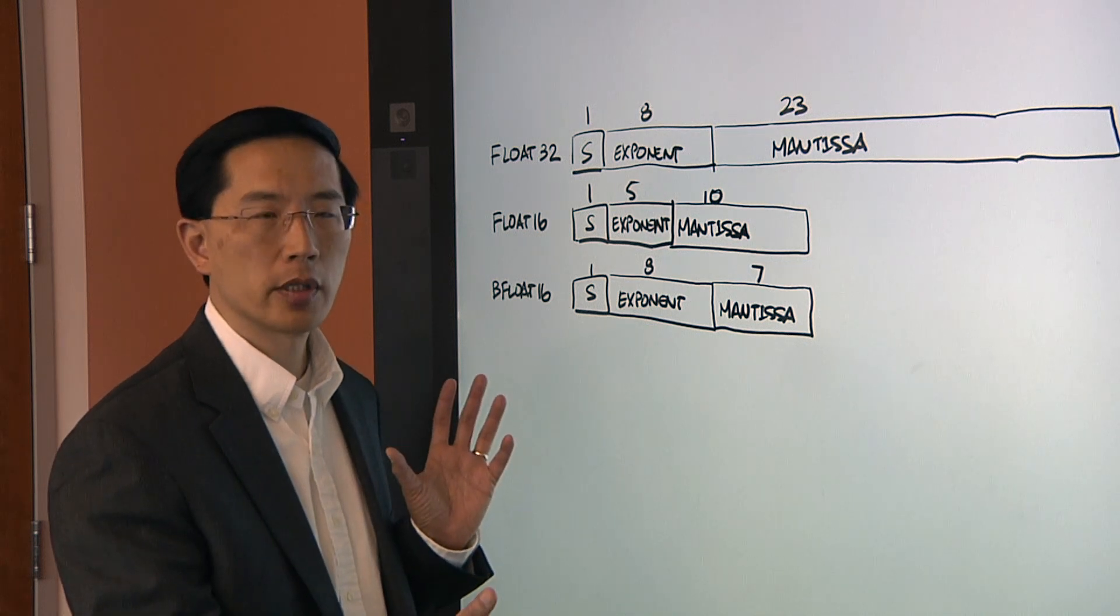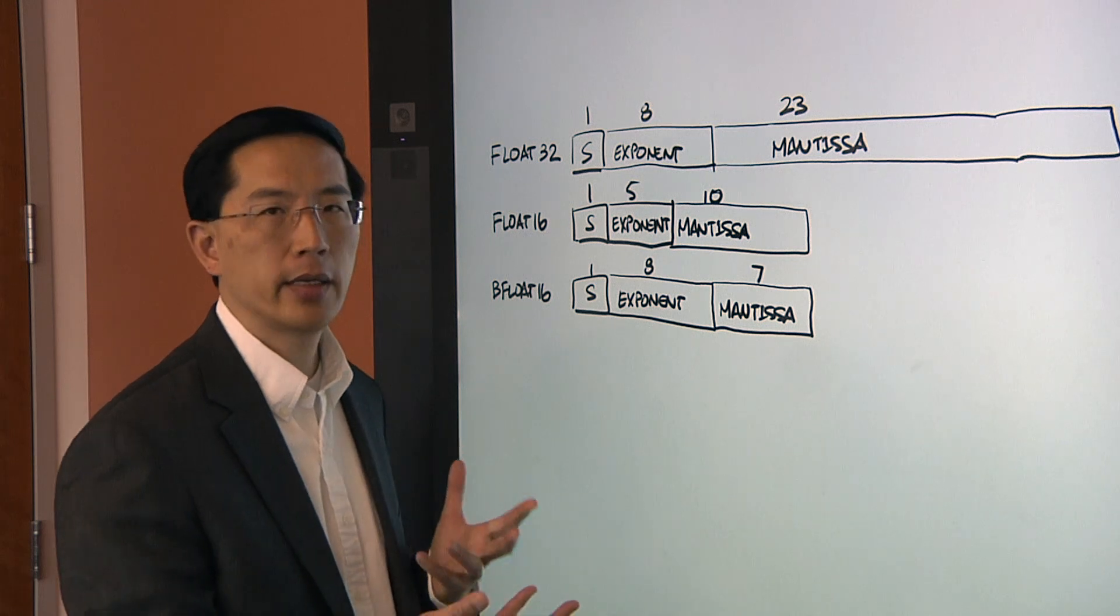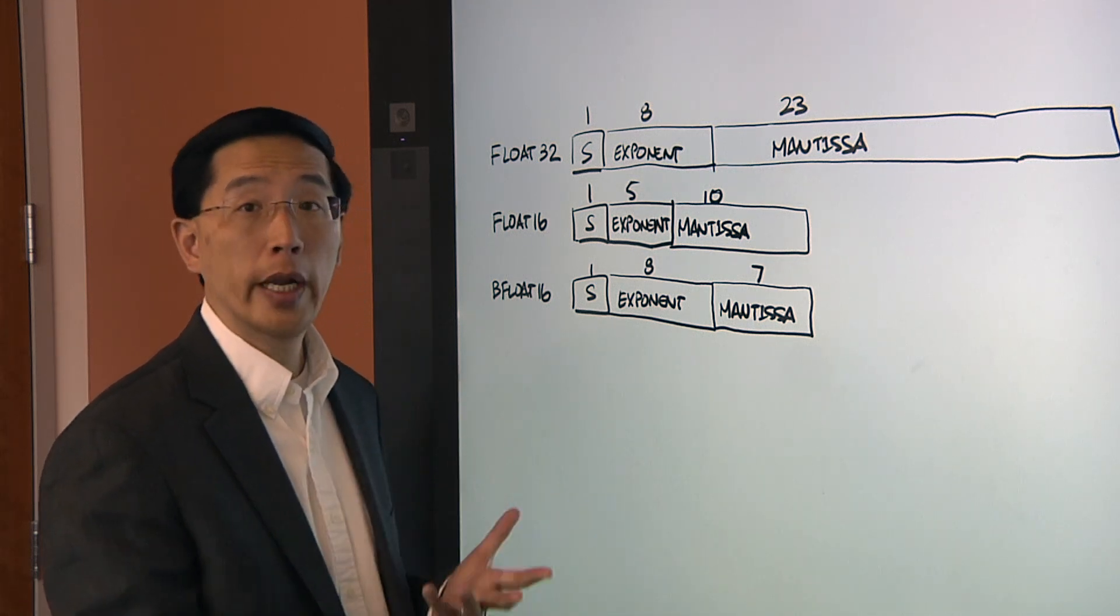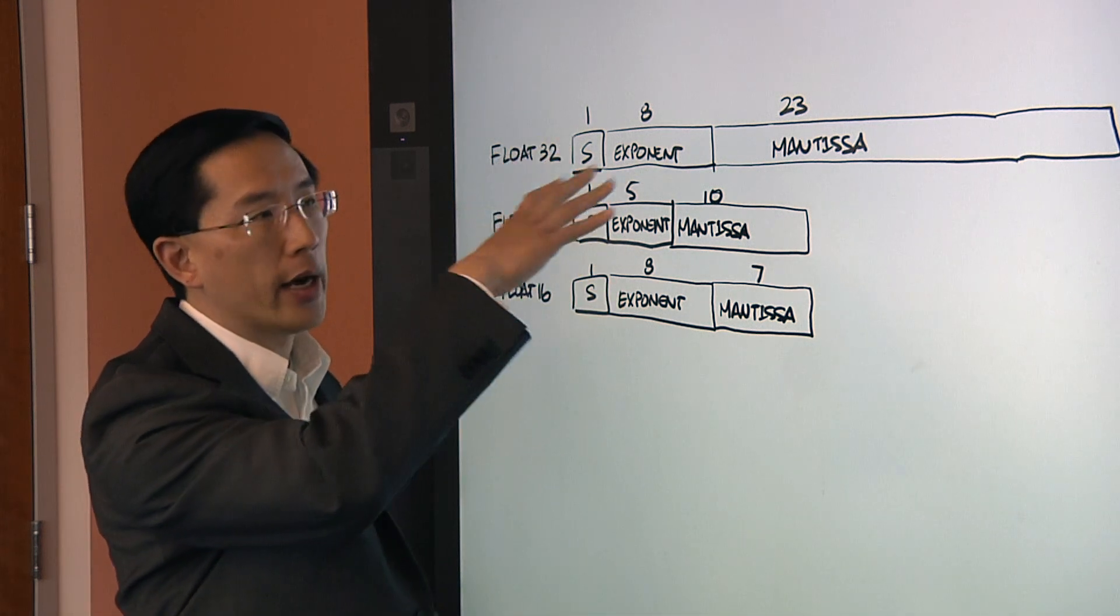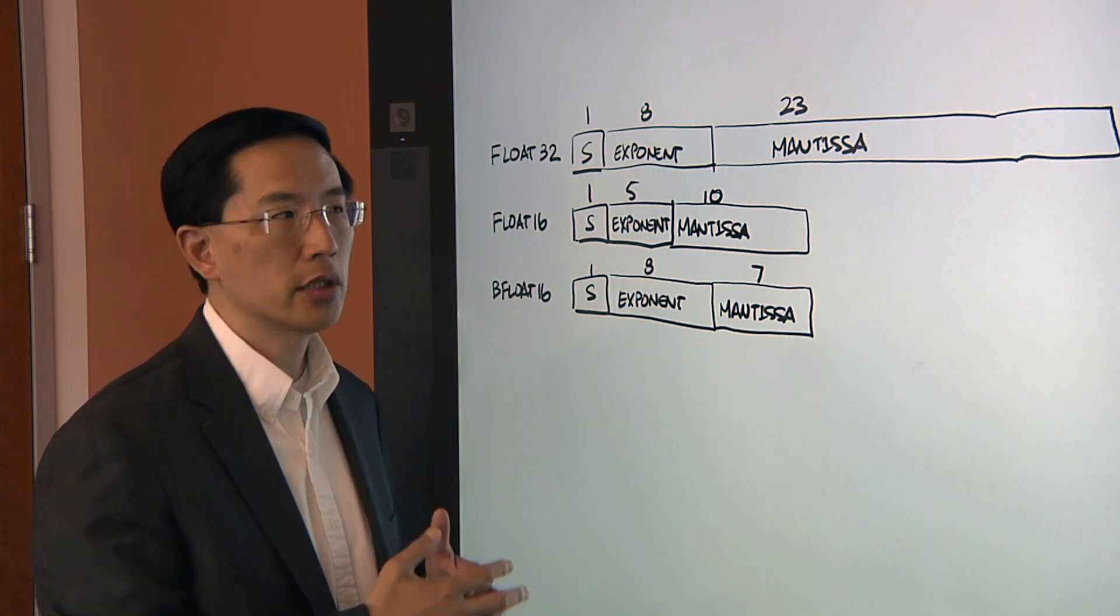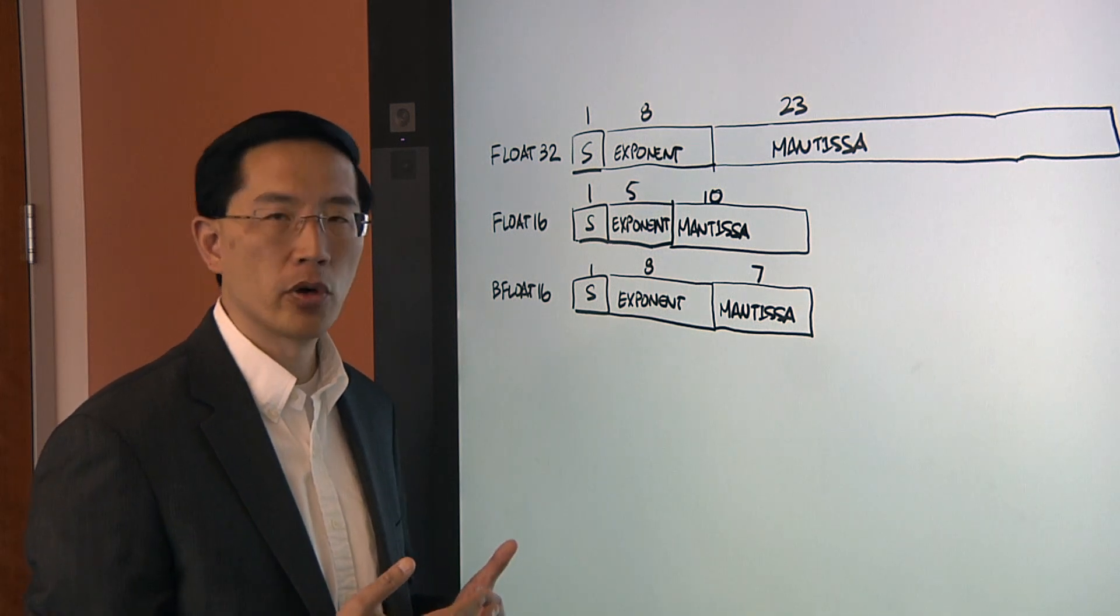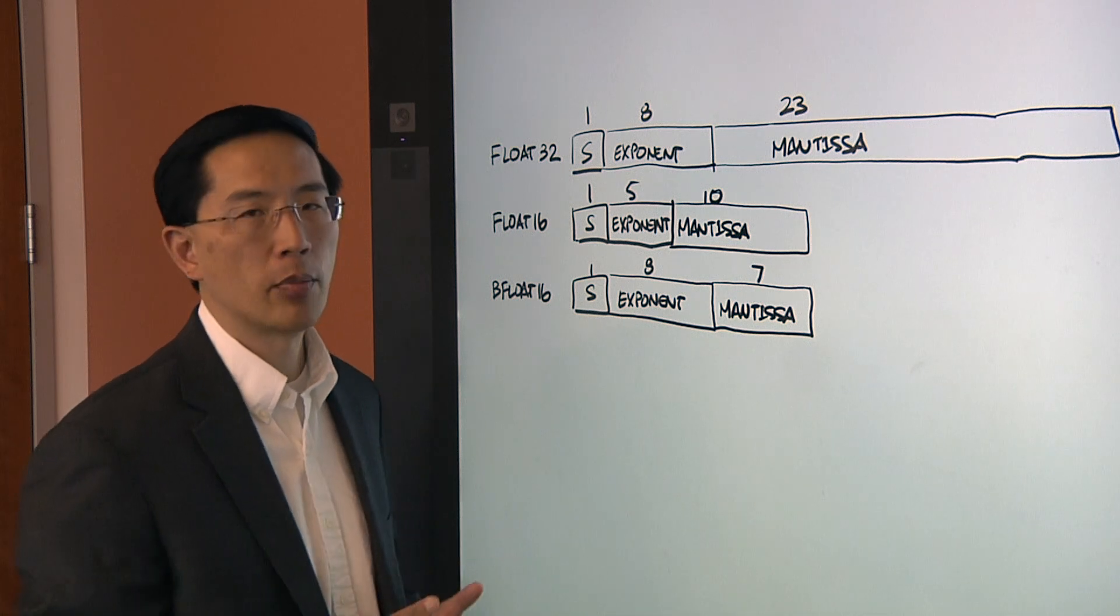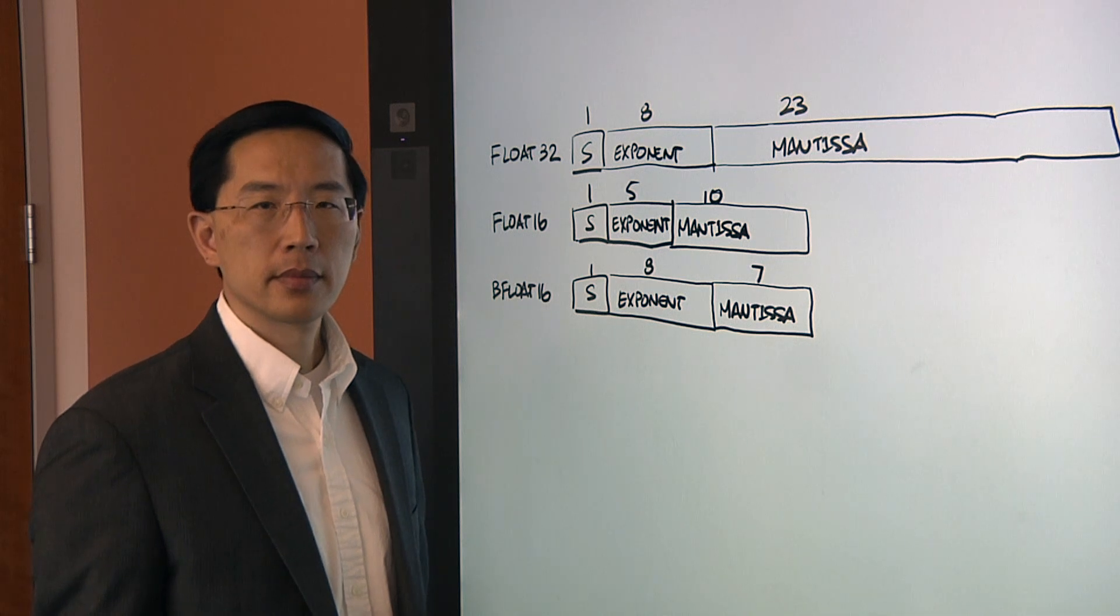But also when you're training, you like to have very high precision. You might actually train using a much higher precision set of numbers. And then when you go to inference, you might actually reduce down to smaller size numbers so that you don't need to burn as much power, and you don't need to spend as much memory bandwidth to get the kind of performance that you're training for.